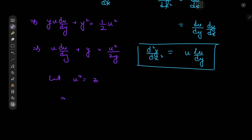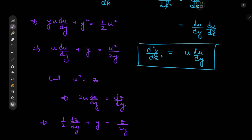Why would I want that? Because if we differentiate with respect to y we have 2u·(du/dy) equal to dz/dy, and this implies that the first term becomes one half of dz/dy. Then we have a y term, and u² becomes z, so we have z/(2y). Multiplying through by 2 gives us dz/dy plus 2y equal to z/y.